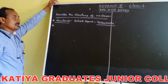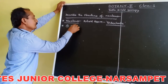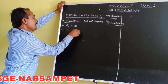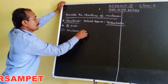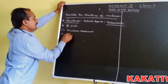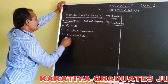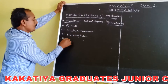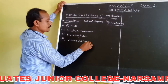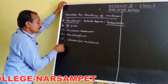Each nucleus consists of four parts. First one: nuclear membrane. Second one: nucleoplasm. Third one: chromatin material. And fourth one: nucleolus.